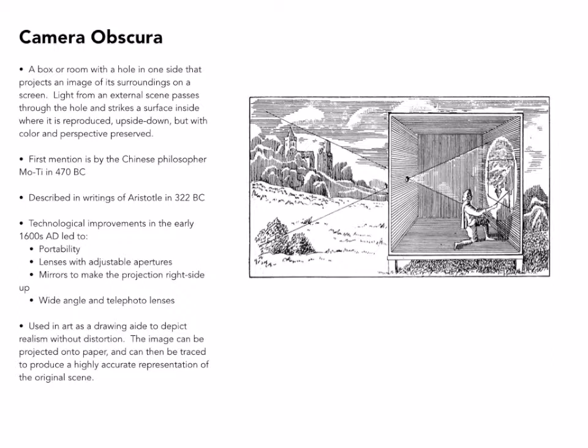The first projection of imagery was affected by the camera obscura, which is basically a box or a room with a hole in one side that projects an image of its surroundings on a screen. Light from an external scene passes through the hole and strikes a surface inside where it is reproduced upside down, but with color and perspective preserved.